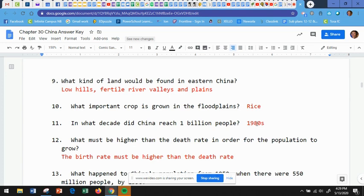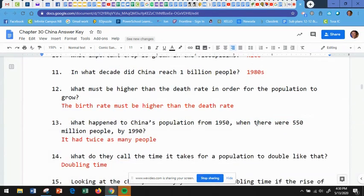Number 10, what important crop is grown in the floodplains? And the answer is rice. Number 11, in what decade did China reach one billion people? In the 1980s. Number 12, what must be higher than the death rate in order for the population to grow? Well, the birth rate has to be higher than the death rate. So more people are being born than are dying. So therefore, the population is growing.